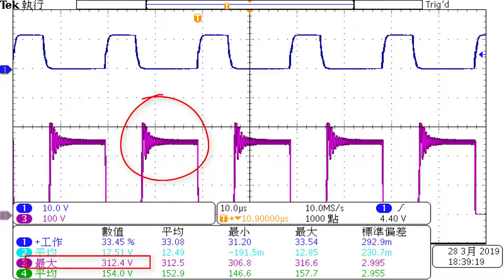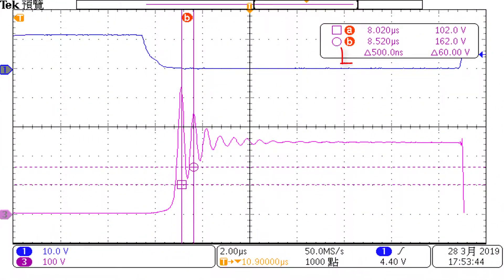This is what VDS would look like without the addition of the RCD and RC snubbers. Here we can see the high ringing frequency.